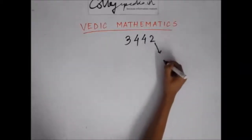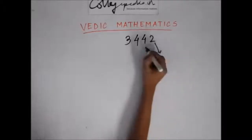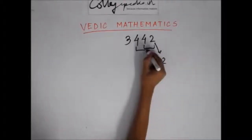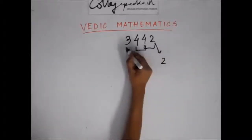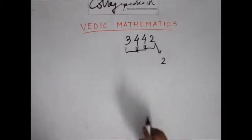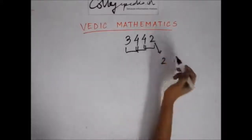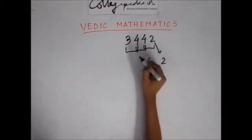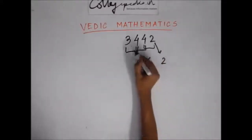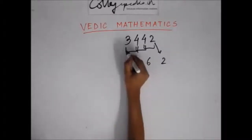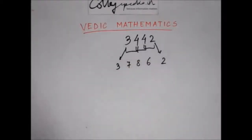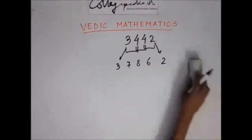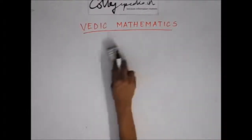Let's take a bigger example: 3442 multiplied by 11. Start with the last digit 2. Then: 4+2=6, 4+4=8, 4+3=7, and the last digit remains 3. So my answer is 37862.